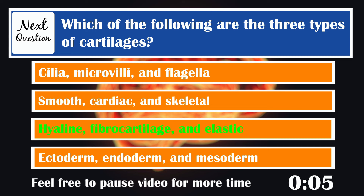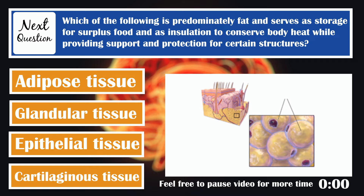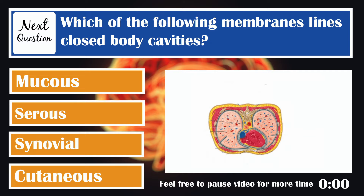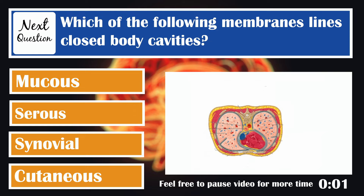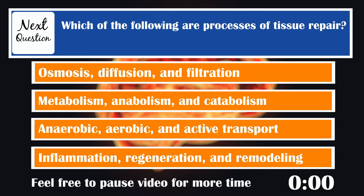Which of the following is predominantly fat and serves as storage for surplus food and as insulation to conserve body heat while providing support and protection for certain structures? Adipose tissue. Which of the following membranes lines closed body cavities? Serous membranes. Which of the following are the processes of tissue repair? Inflammation, regeneration, and remodeling.